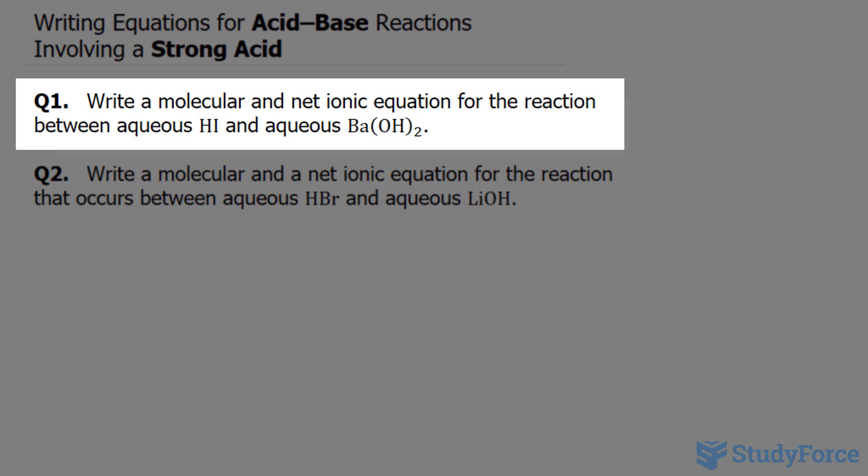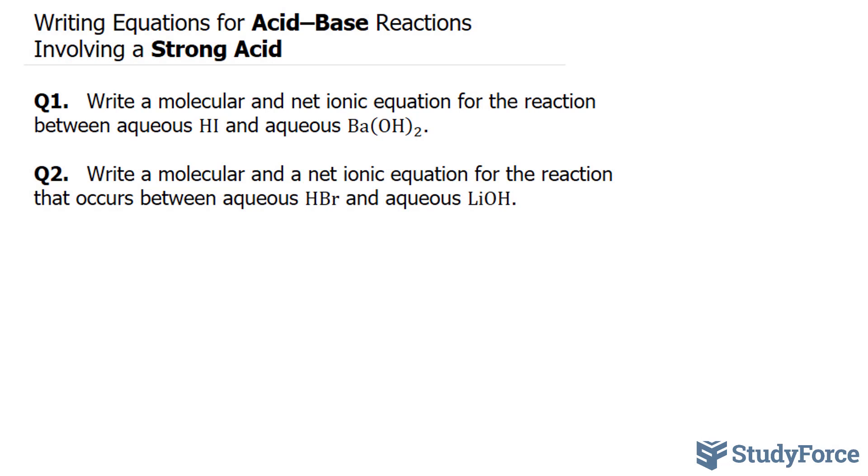Question one reads, write a molecular and net ionic equation for the reaction between HI and aqueous Ba(OH)2. HI is the formula for hydroiodic acid, and Ba(OH)2 is the formula for barium hydroxide.